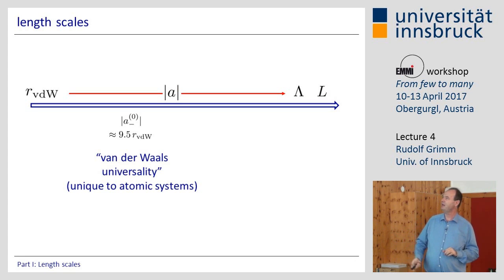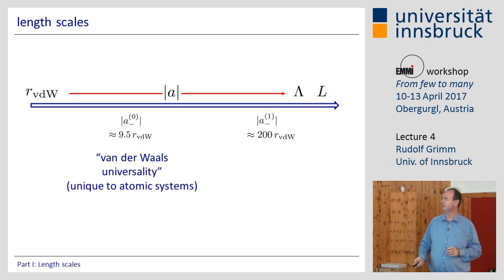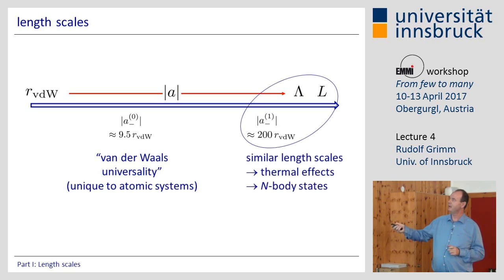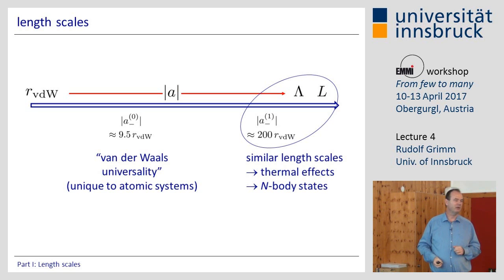To see the next Efimov state, it's somewhere around 200 times the Van der Waals length, which is really huge and very difficult to reach. You find that the length scales for thermal effects and degeneracy conditions are also relevant there, and higher-order effects start to appear.